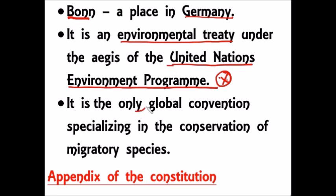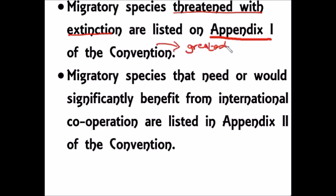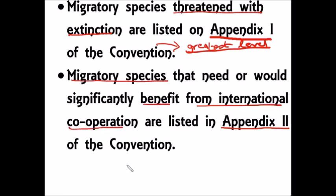The Bonn Convention is the only global convention specialized in the conservation of migratory species — there is no other convention available for conserving migratory species. Regarding the appendices: Appendix 1 includes migratory species that are threatened with extinction and provides the greatest level of conservation effort. Appendix 2 includes migratory species that are not threatened with extinction but need international cooperation so that their survival can be ensured.